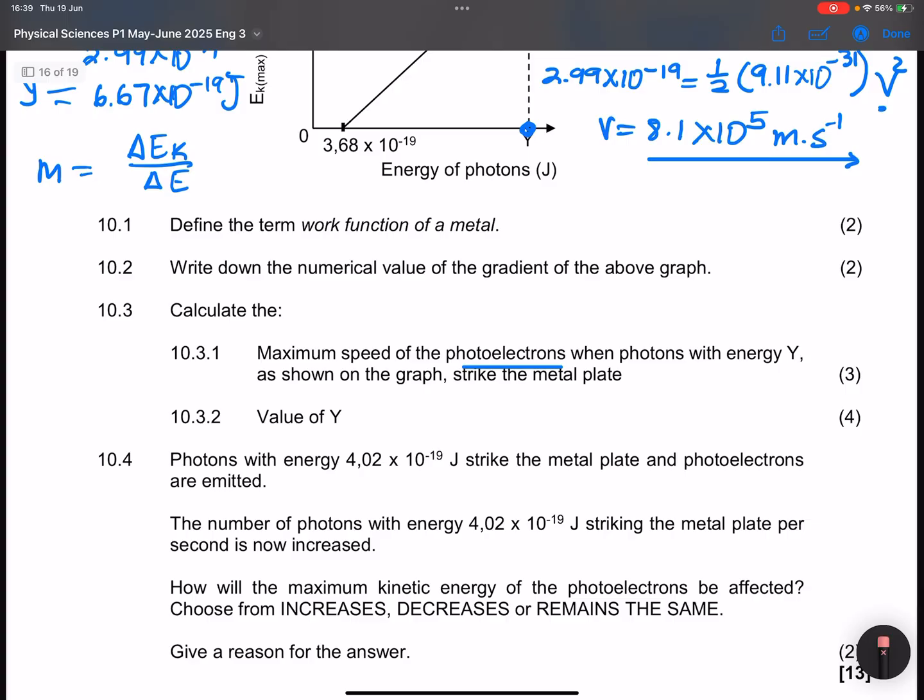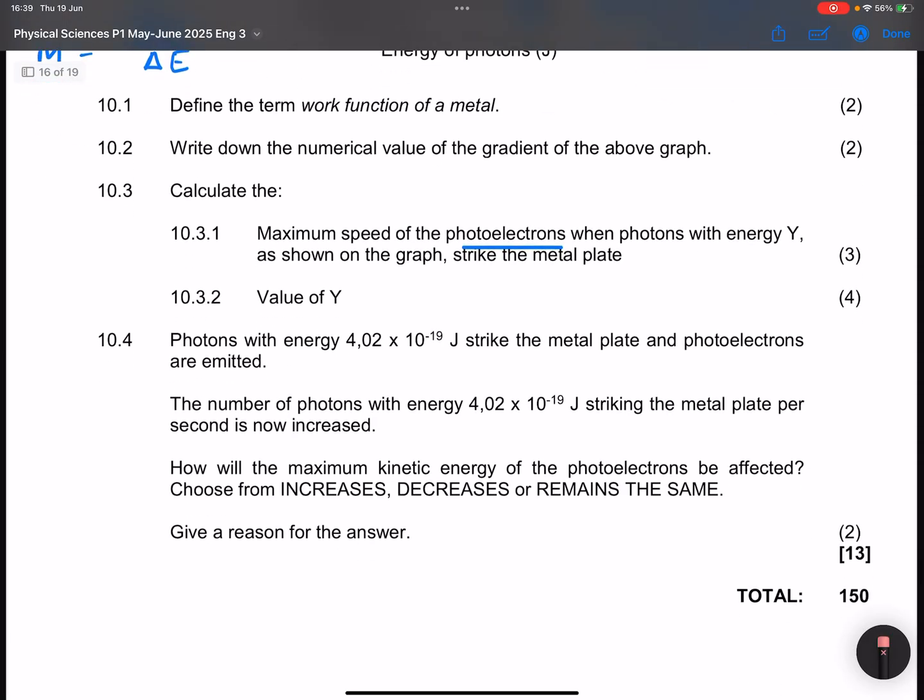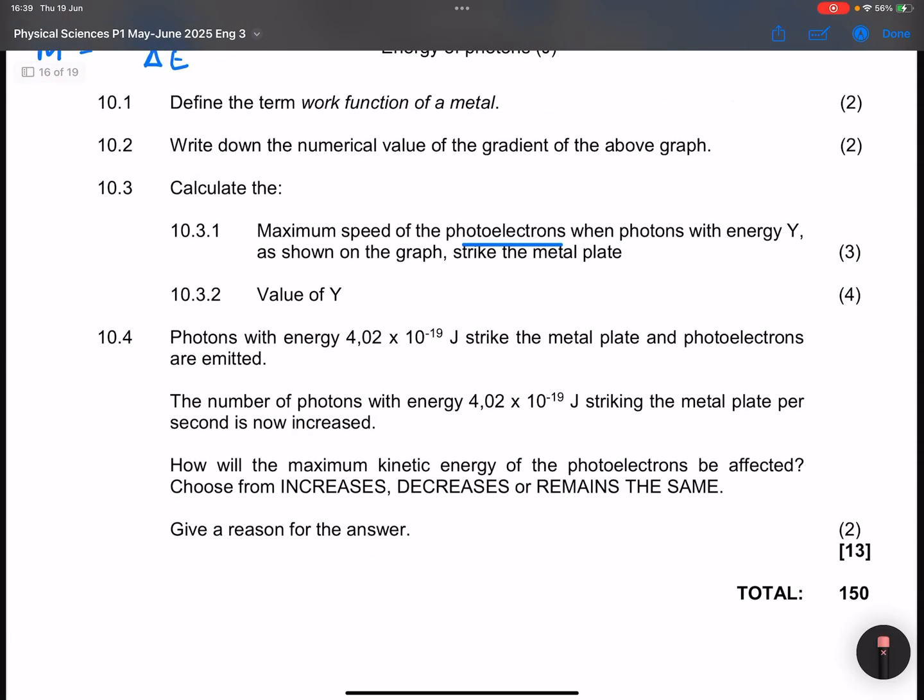Let's see. They say photons with an energy of 4.02 strike the metal plate and the photoelectrons are emitted. They say the number of photons with energy 4.02 striking the metal plate per second is now increased. Which means we are increasing the intensity. The more the intensity, the more the number of photons that are released.